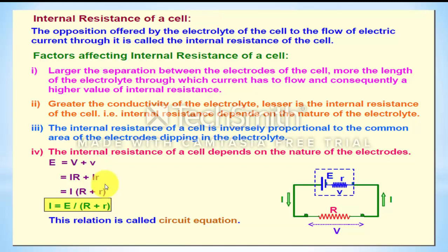A pencil battery rated 1.5 V may show only 1.1 V on a voltmeter when current flows. This is because potential is lost due to internal resistance. The lost volt is 1.5 minus 1.1 equals 0.4 volt. So in this example, the lost volt is 0.4 V and the terminal potential difference is 1.1 V.